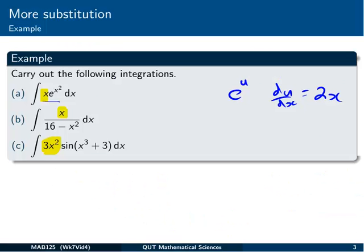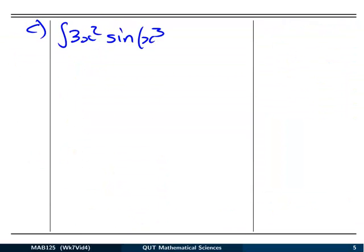The final example is where we integrate 3x squared by sine of x cubed plus 3, all with respect to x. We've got a function inside the sine which is making it tricky. We can't use the sine integral rule because we've got a function. The derivative of that function is appearing completely outside, so this one's going to be easier again.